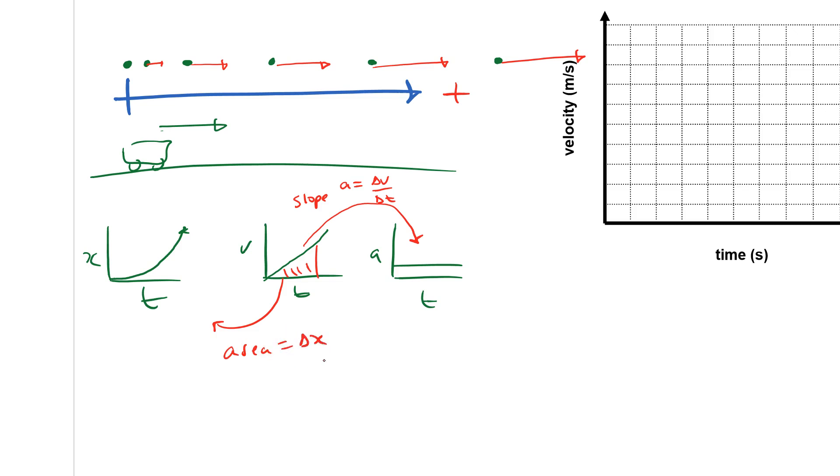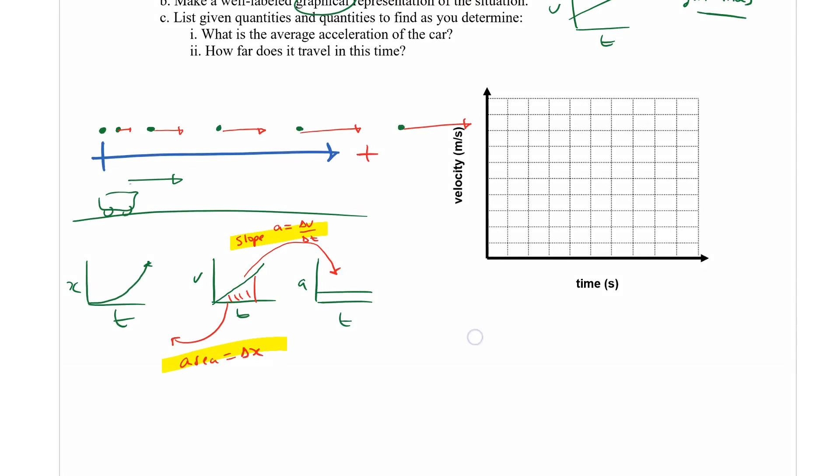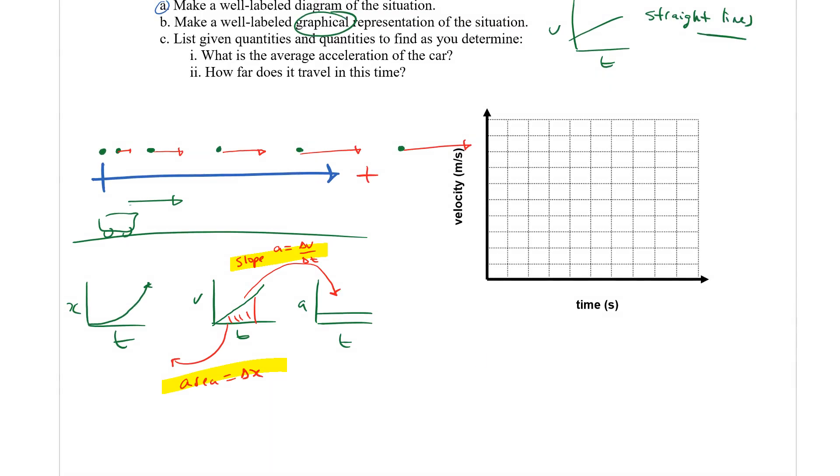So it doesn't necessarily tell us where we started, but once we decide and we chose the origin, we can say that. So those are the two things we're going to be using. We're going to be using this fact that the area under the Vt graph is equal to displacement, and the slope is equal to acceleration. So let's try to answer the next part of the question. It says list given quantities. Oh, we didn't finish making our Vt graph.